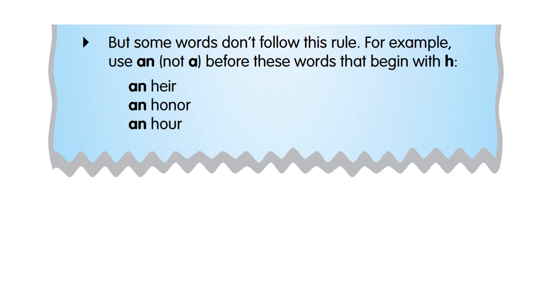But some words don't follow these rules. For example, use an, not a, before these words that begin with H. So, we know that house is H sound. So, we put a house. But this word H is silent. It sounds like air.